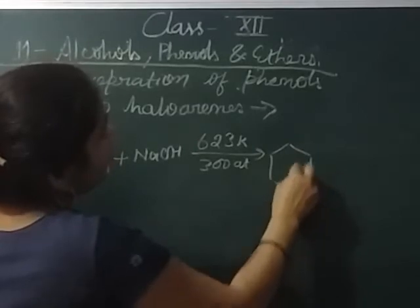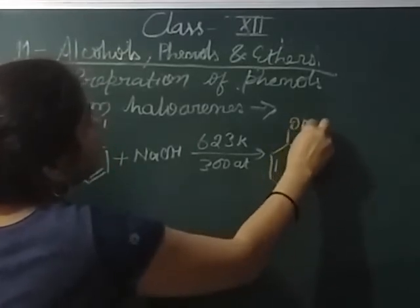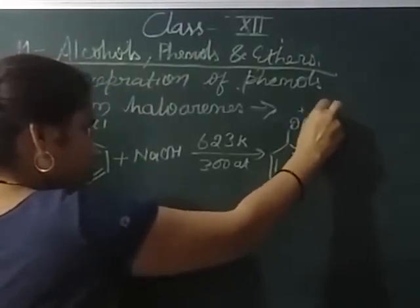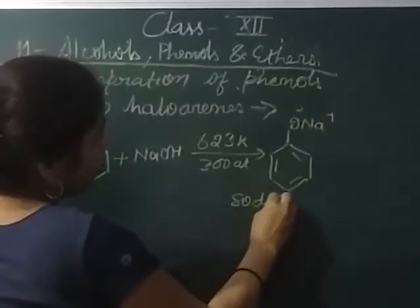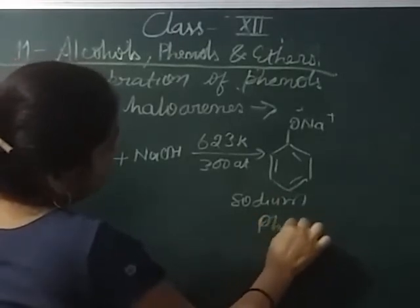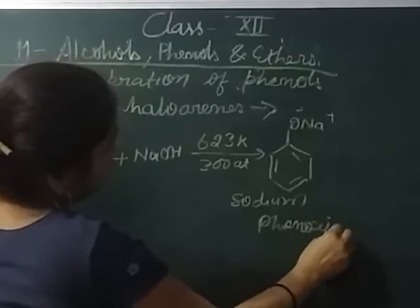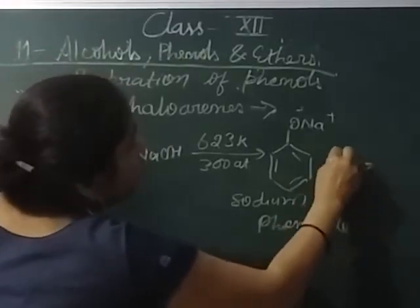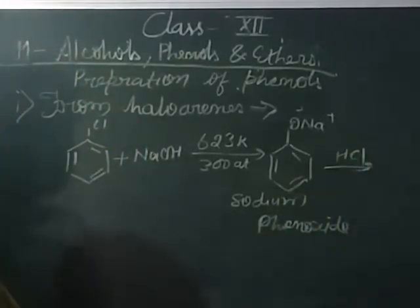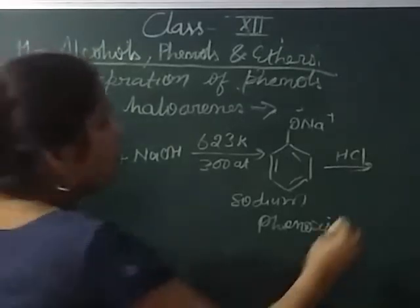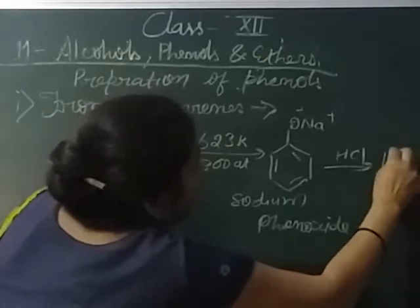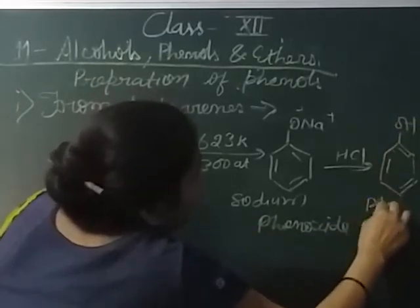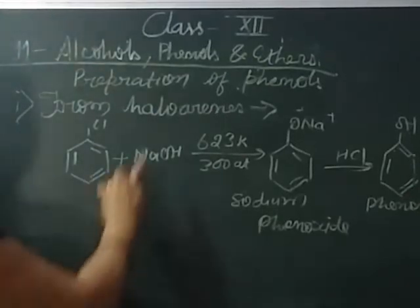Sodium phenoxide is formed, and by acidification of sodium phenoxide it converts into phenol. This is the first preparation method of phenol from haloarenes.